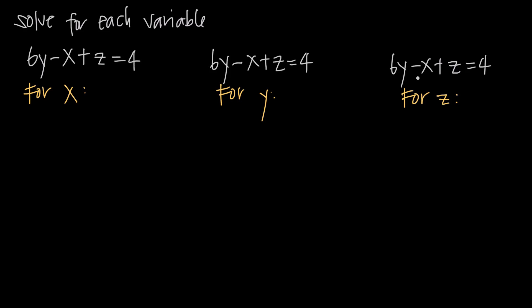So we're going to need to solve for x, for y, and for z. Let's look at this first example where we solve for x. This is going to be the same process as solving a single variable equation. We just need to get this variable on its own side of the equation all by itself and move everything else to the other side.